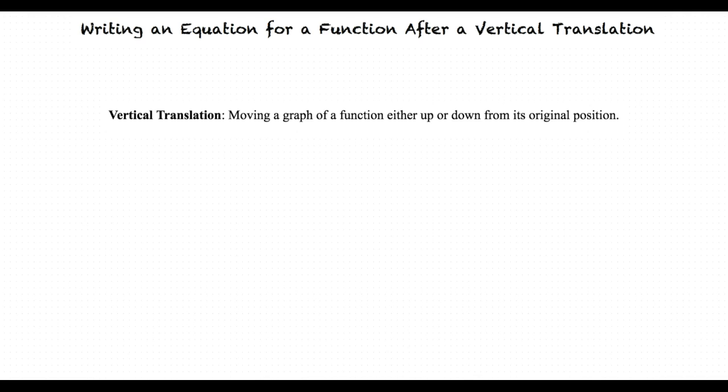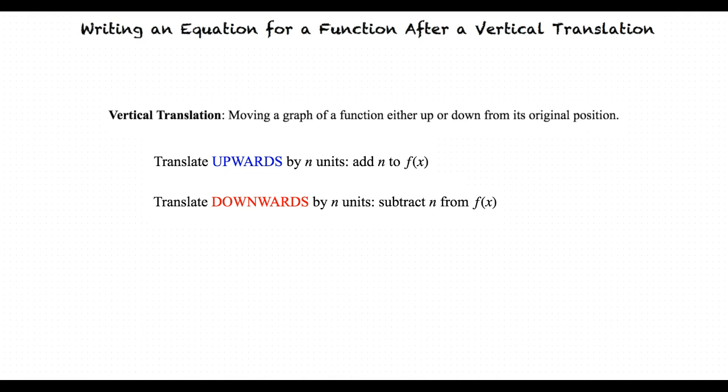When writing a function that incorporates a vertical translation, we add the number of units we want to move it by to translate the function further up. However, if we wish to move the function downwards, then we subtract the number of units we wish to move it by.